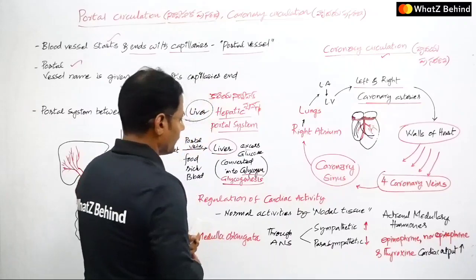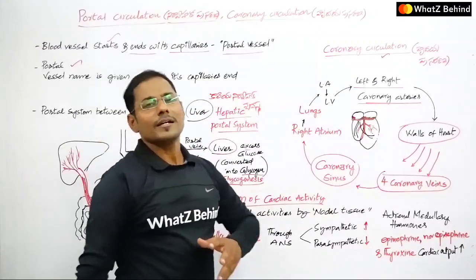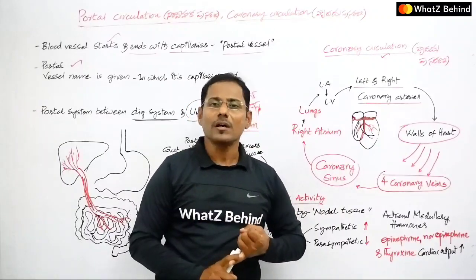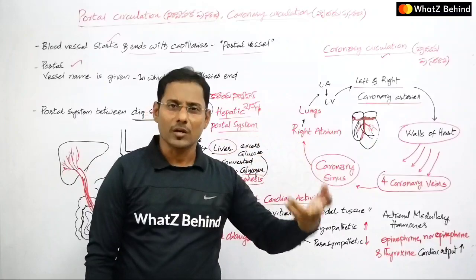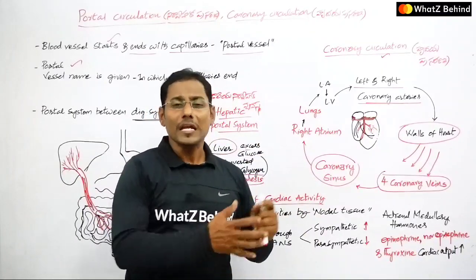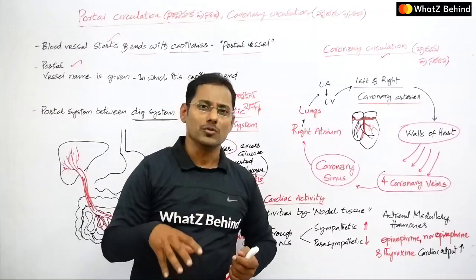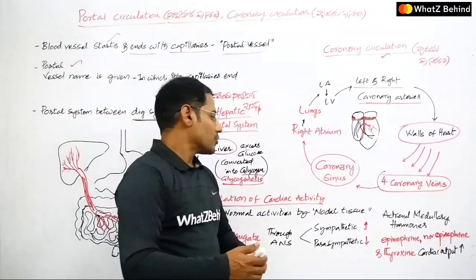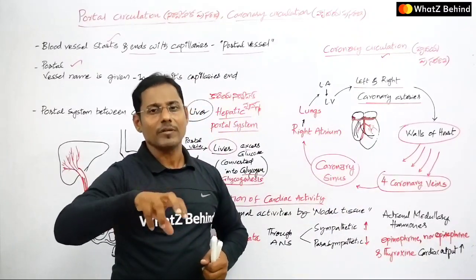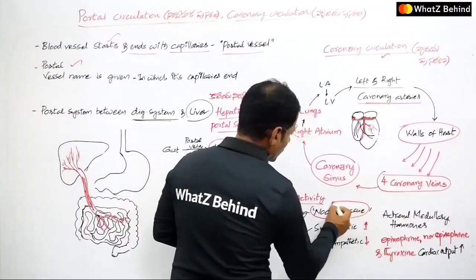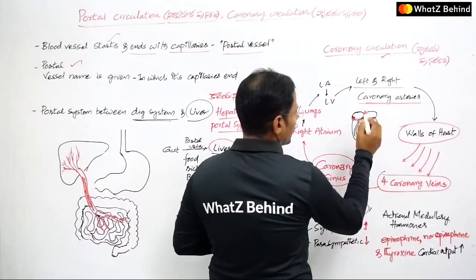Next, let's look at cardiac activity regulation. Cardiac activity is regulated through the nervous system. The heart beat rate — whether it is fast or slow — is controlled by the autonomous nervous system. The medulla oblongata in the brain regulates cardiac activity through the autonomous nervous system. The nodal tissue within the heart generates nerve impulses that control the entire heart.